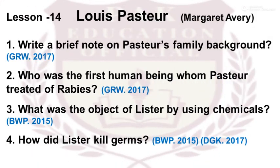Lesson 14: Louis Pasteur. Write a brief note on Pasteur's family background. Who was the first human being whom Pasteur treated for rabies? What was the object of Lister by using chemicals? How did Lister kill germs?